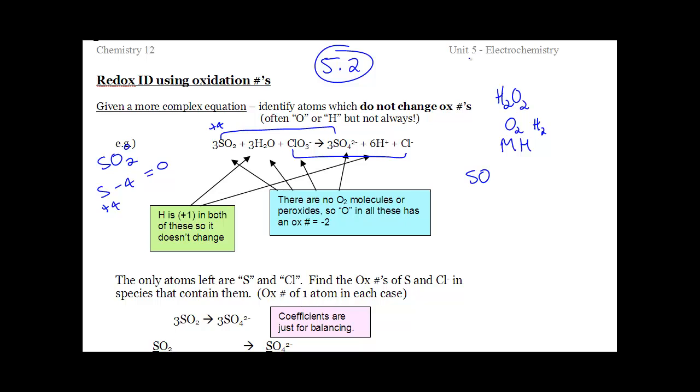The SO4 has a charge of minus 2. We're solving for S. There are four O's. 4 times negative 2 is minus 8. And that whole thing has a total charge of minus 2. So something minus 8 is negative 2. That S has to be plus 6. So if S changed from 4 to a 6, S is getting oxidized. It's losing two electrons.